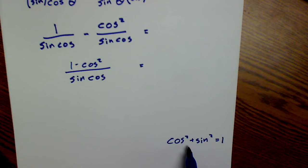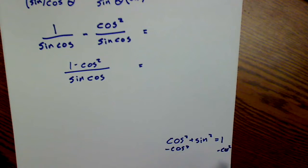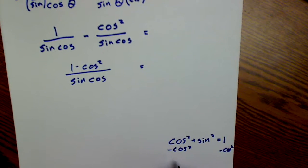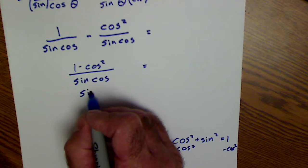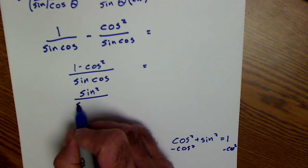Right here I could subtract cosine squared from both sides. And I could see that sine squared of theta is equal to 1 minus cosine squared of theta. So I replace this with sine squared of theta all over sine cosine.